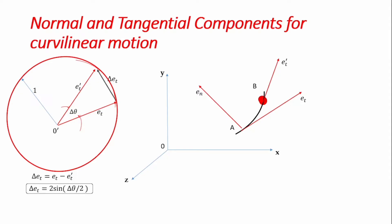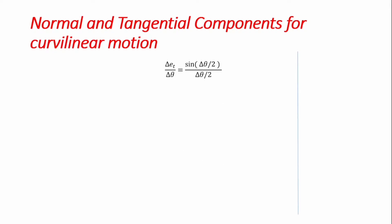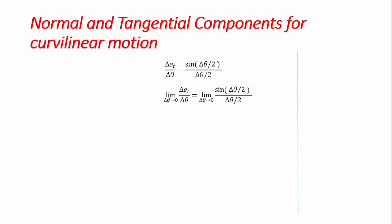Dividing both sides by Δθ: Δeₜ/Δθ = 2 sin(Δθ/2) / Δθ. Rearranging, Δeₜ/Δθ = sin(Δθ/2) / (Δθ/2). Finding the limiting value as Δθ → 0, since sin(Δθ/2) / (Δθ/2) → 1, we get Δeₜ/Δθ = 1. This is also equal to the unit radius of curvature and equals eₙ. Therefore deₜ/dθ = eₙ — the derivative of eₜ with respect to θ gives eₙ.